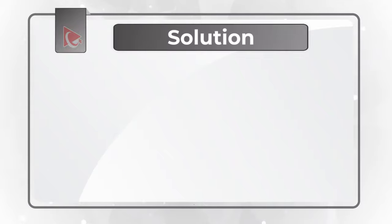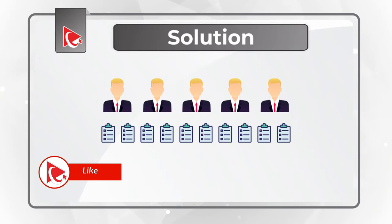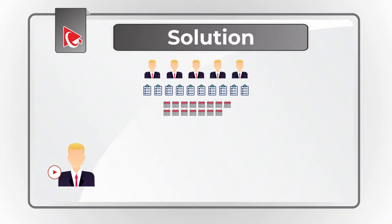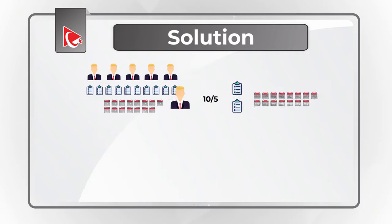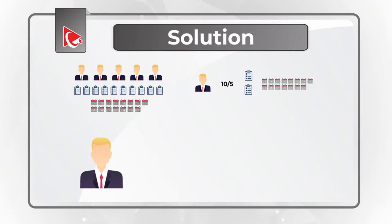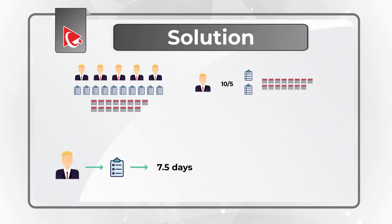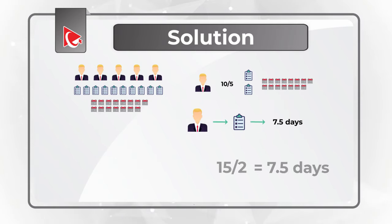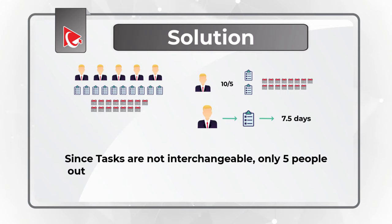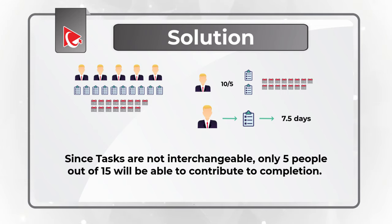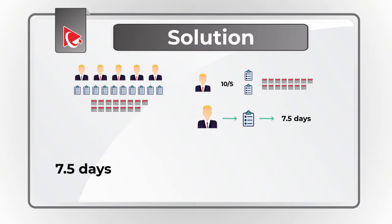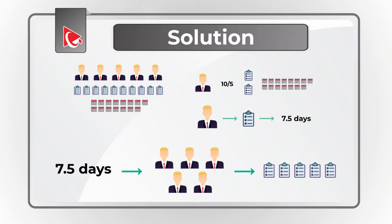Here's the trick. If 5 people can complete 10 tasks in 15 days, then 1 person can complete 10 divided by 5, which is 2 tasks in 15 days. Since tasks are the same length, 1 person can complete 1 task in 7.5 days, which is calculated as 15 divided by 2, which equals 7.5 days per task. Since tasks are not interchangeable, only 5 people out of 15 will be able to contribute to completion of 5 tasks, and it will take 7.5 days for 5 people to complete 5 tasks.